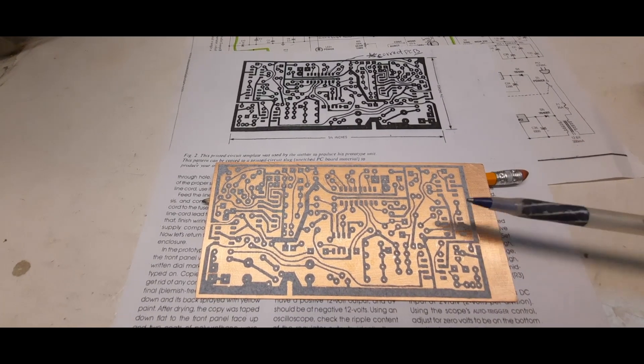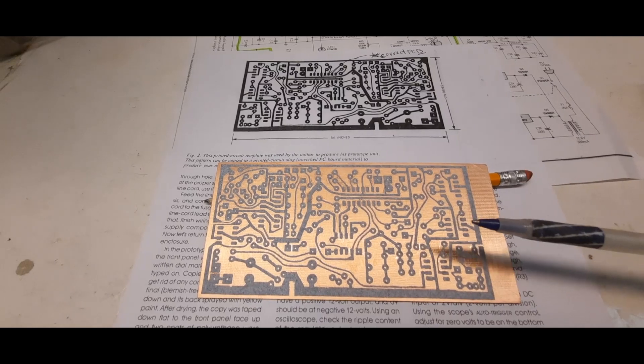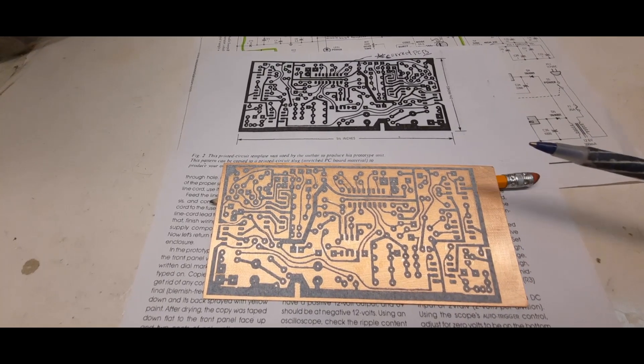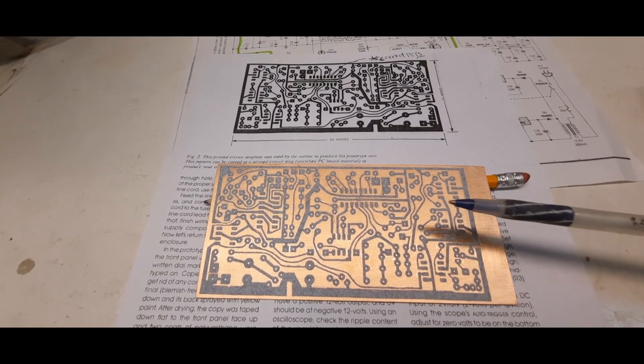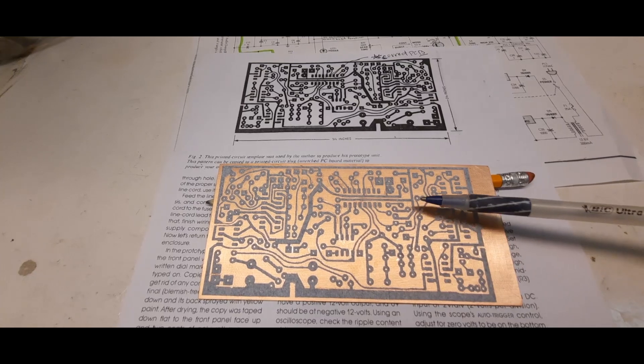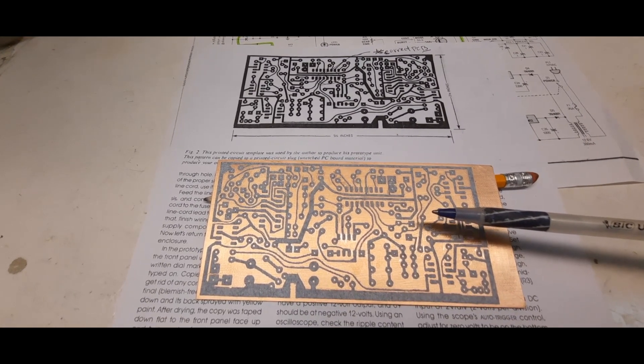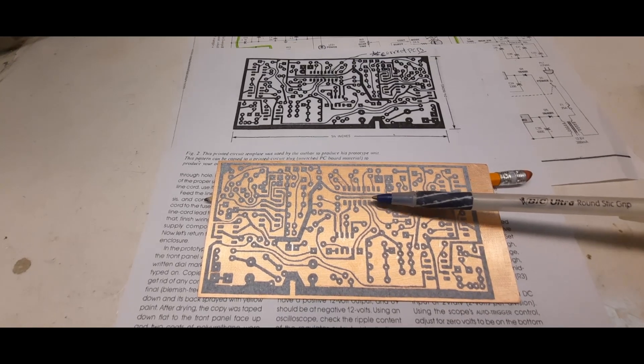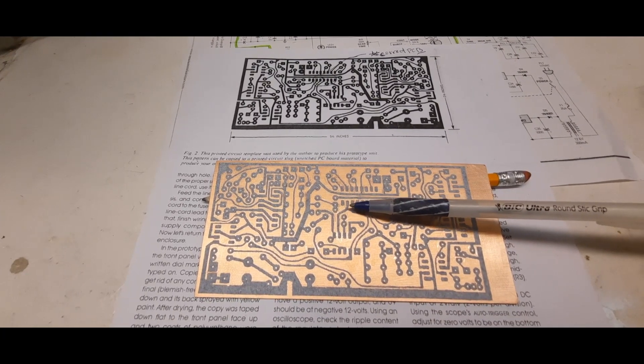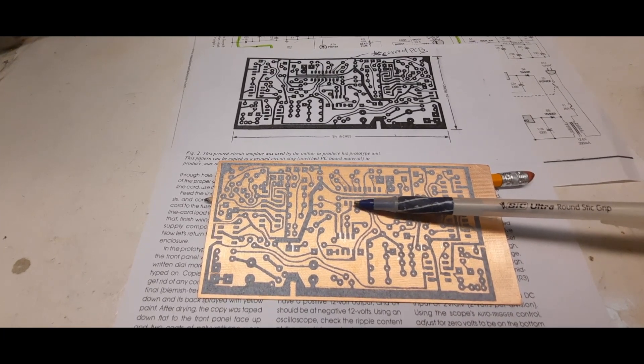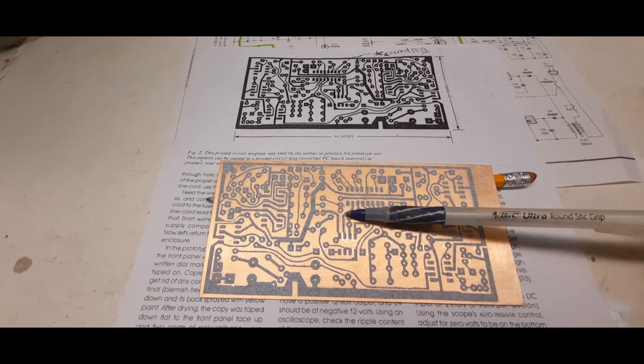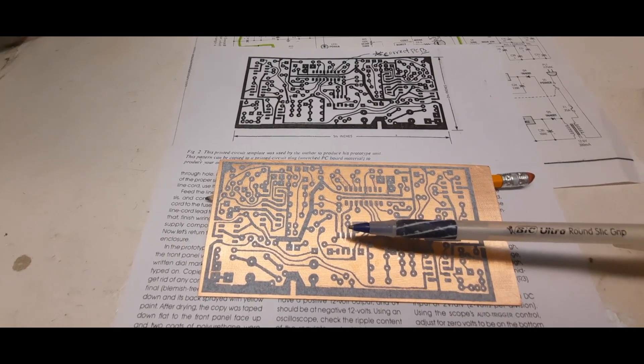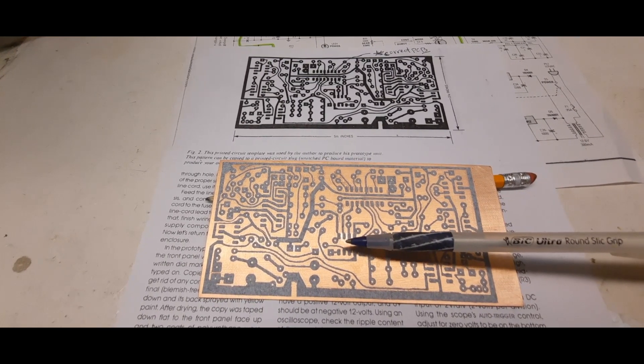I could have printed the board on a transparency and used the photo etching method to have it the right way. But I'm going to go with it - it worked great on the 30 watt amplifier I made.